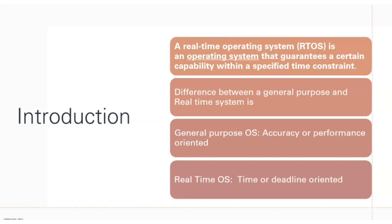When considering a task in a general purpose system, the system intends to finish the task with the most accuracy and best performance. In a real-time system, there will be a deadline for every task and each task has to complete within that deadline. So just as the name indicates, time and deadline are very important things.